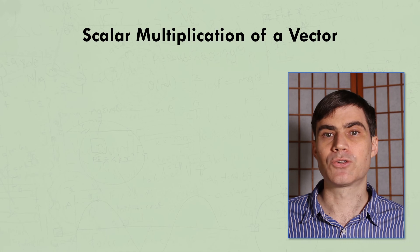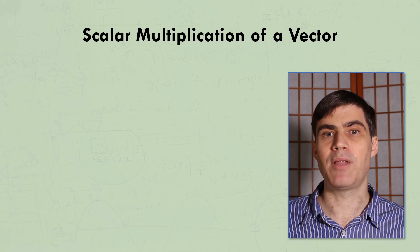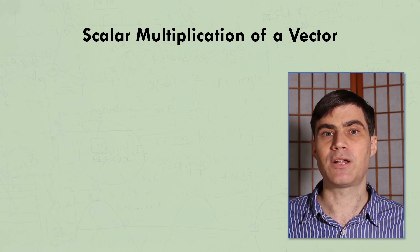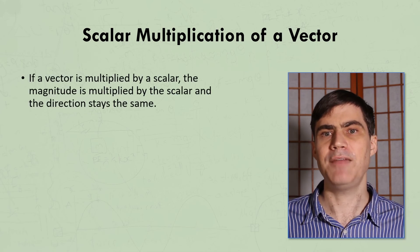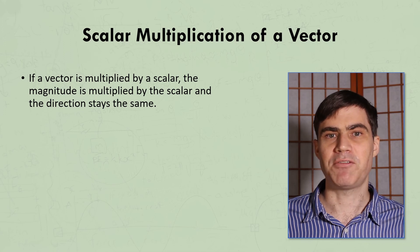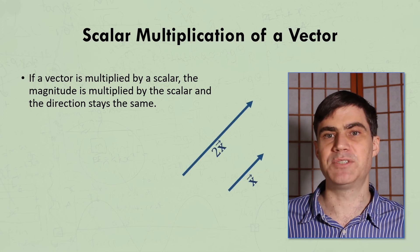Now let's look at what's called scalar multiplication of vectors, that is multiplying a vector by a scalar, which basically just means a number without a direction. The magnitude of the vector is multiplied by the scalar, and the direction stays the same. So if this is vector x, this is 2 times vector x.